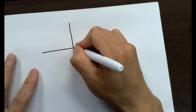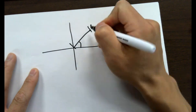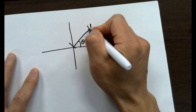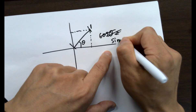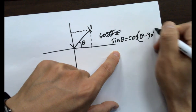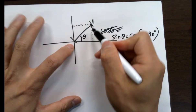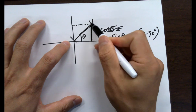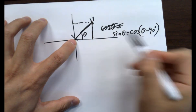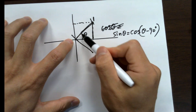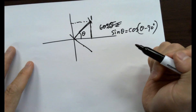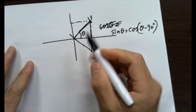The length here is one — fixed. Sine theta equals cosine(theta minus 90 degrees). Sine theta is this divided by this — basically the length here. Cosine(theta minus 90°) — so this is theta minus 90 degrees, coming here. The cosine of that angle is the same as the sine of this angle.